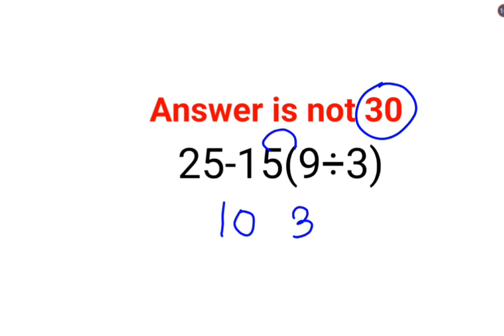Now since there is no sign between 15 and the bracket, the sign is multiplication, and then 10 multiplied by 3, the answer is 30. No, that's not how these things work.